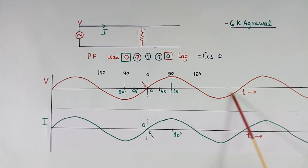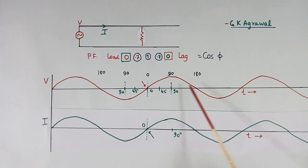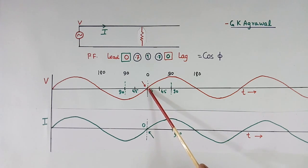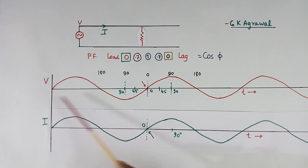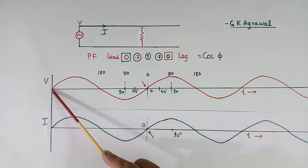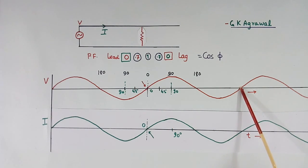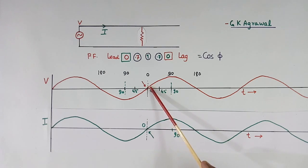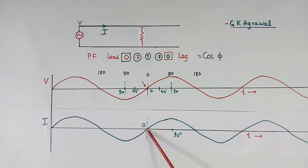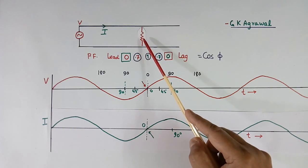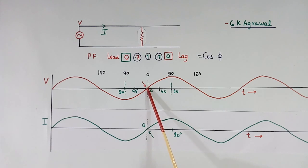In this voltage wave shape, at this point voltage is crossing from minus to plus, and at this point it is crossing from plus to minus. We will consider the point where voltage is crossing from negative to positive. This wave shape has many zero crossing points — where voltage is going from minus to plus, we will consider this. Similarly in current, the zero crossing is here. In case of resistance, the angle between this point and this point is always zero.